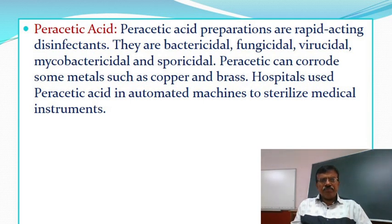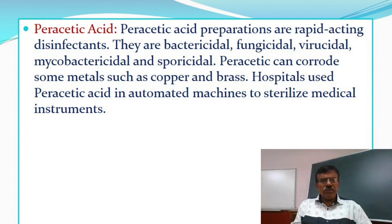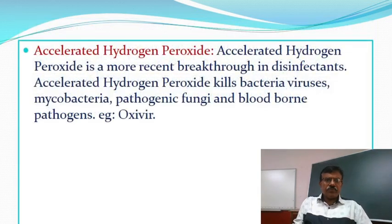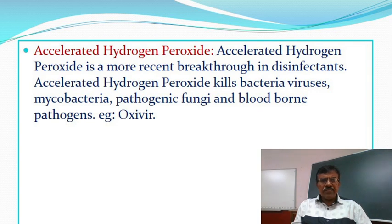Peracetic acid preparations are rapid-acting disinfectants. They are bactericidal, fungicidal, viricidal, mycobactericidal and sporicidal. Peracetic acid can corrode some metals such as copper and brass. Hospitals use peracetic acid in automated machines to sterilize medical instruments. Accelerated hydrogen peroxide is a more recent breakthrough in disinfectants. Accelerated hydrogen peroxide kills bacteria, viruses, mycobacteria, pathogenic fungi and blood-borne pathogens. Example: Oxivir.